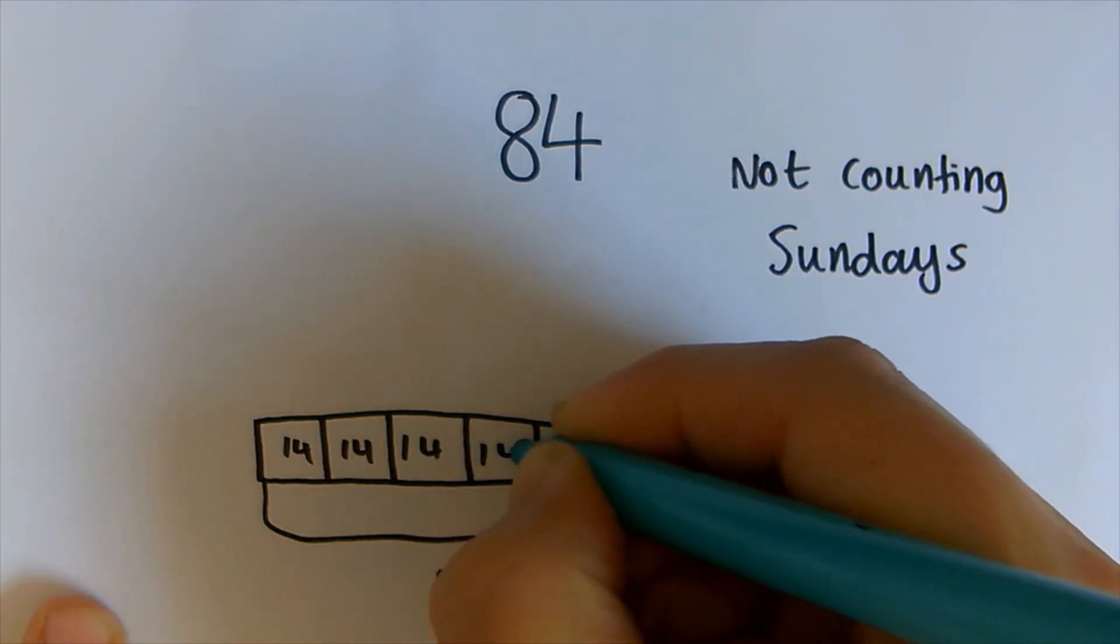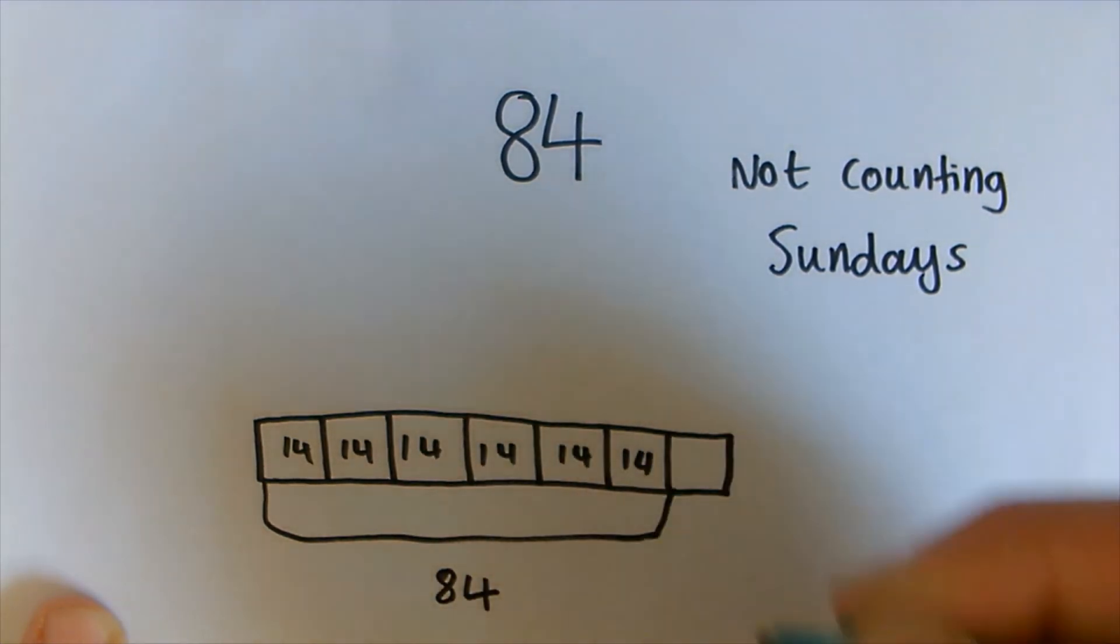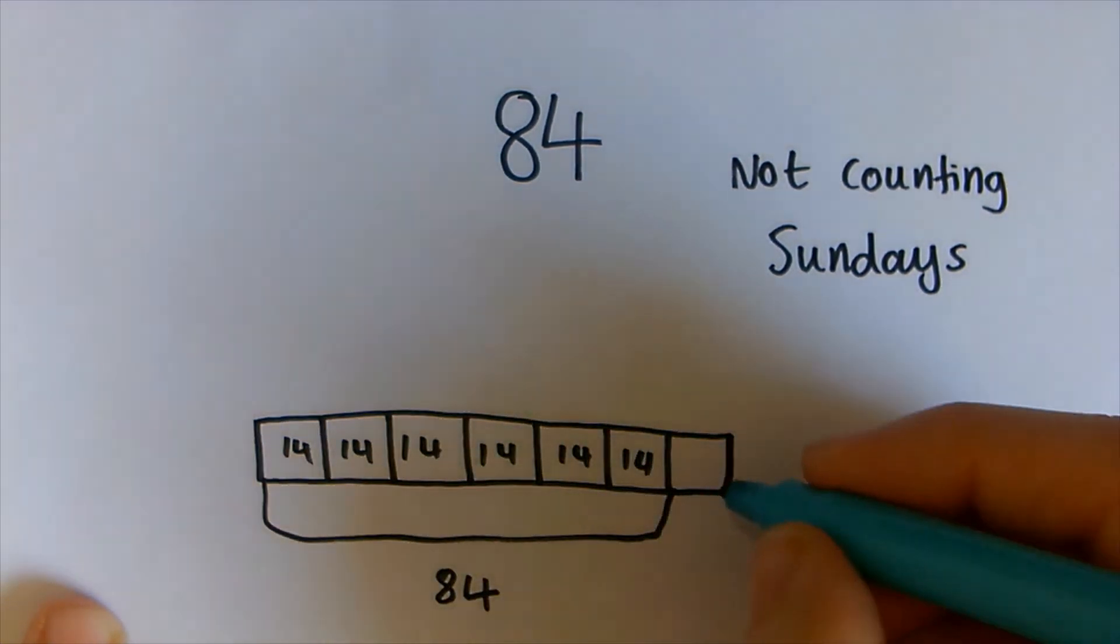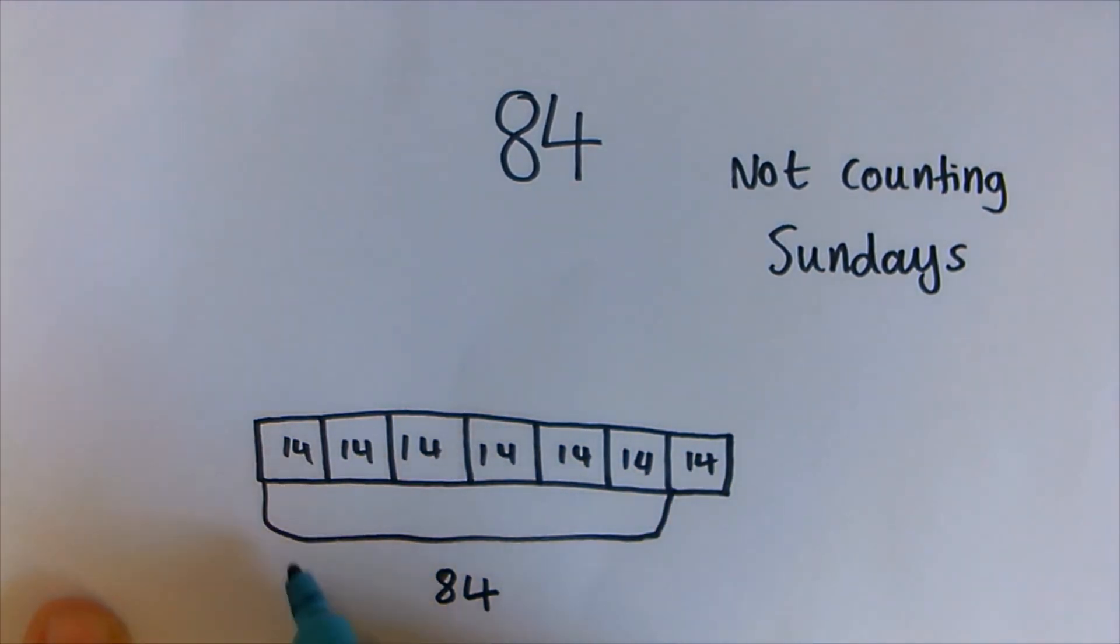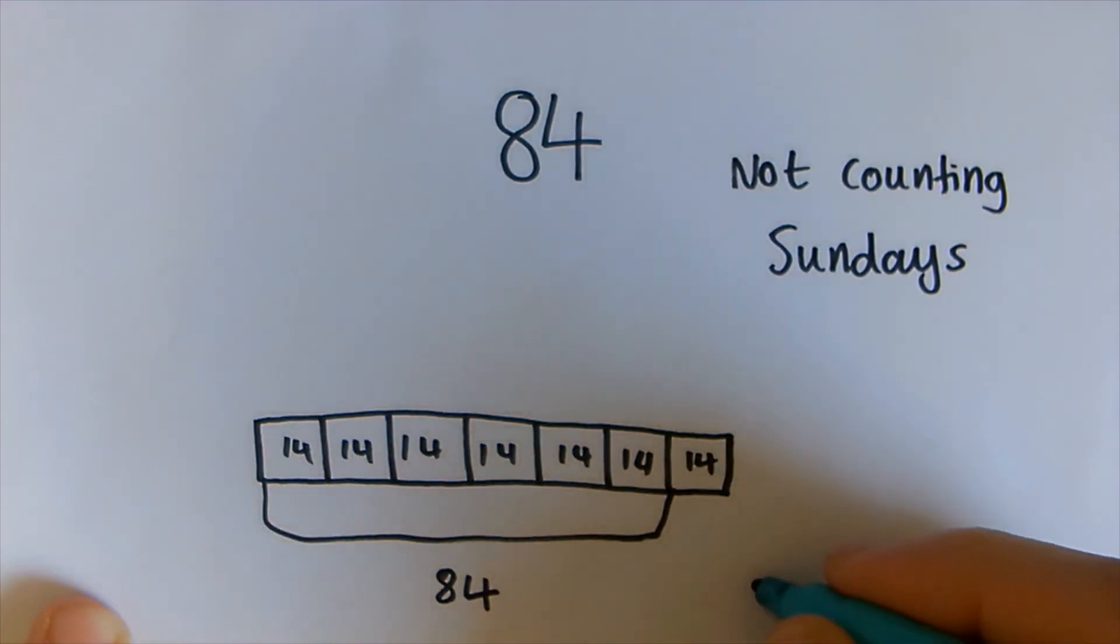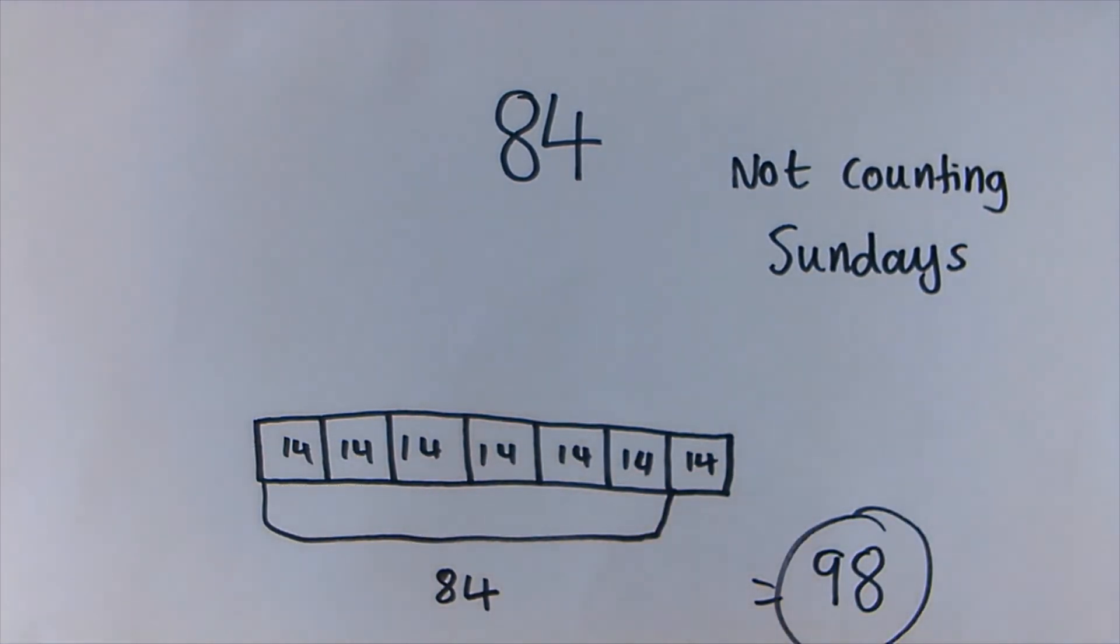So if I had 14 in every part, then the 7th one had to be 14 as well. So if you add 14 onto here, you end up with 98. So it wasn't quite as tricky as it looked. Well done if you got it right. I'll see you in the next one.